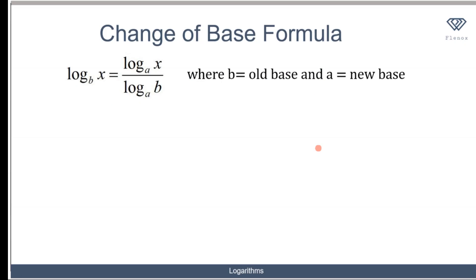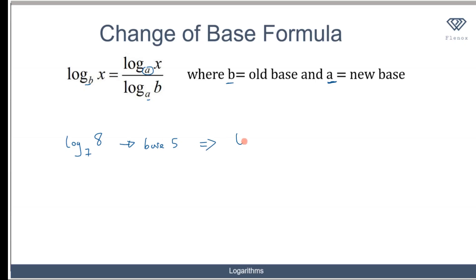Now let's talk about the change of base formula. If you have a logarithm in a particular base and want to change it to a new base, the formula is: log of x to base b equals the logarithm of x in the new base a, over the logarithm of the old base b in the new base a. For example, if I have the logarithm of 8 to base 7 and want to change to base 5, it becomes log 8 to base 5 over log 7 to base 5.